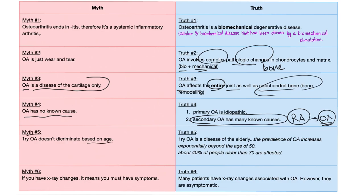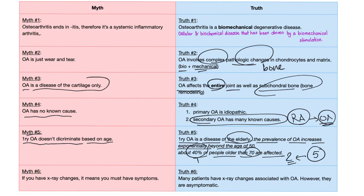Myth number five: primary osteoarthritis is not a disease of the elderly. The truth is, the prevalence of osteoarthritis increases exponentially beyond age 50, and among people older than 70 years, 40% have osteoarthritis. Myth number six: if you have x-ray changes, it means you have symptoms. Many patients have x-ray changes associated with osteoarthritis but are completely asymptomatic — don't confuse the two.